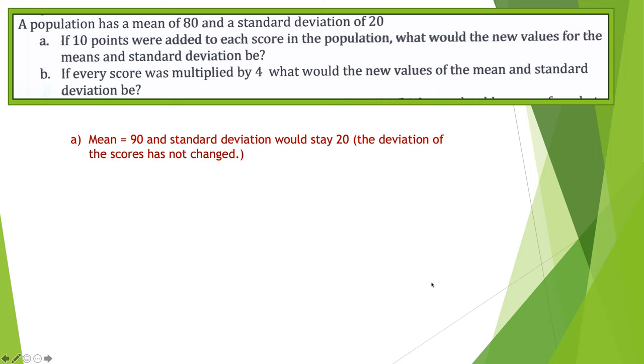So for part A, the mean would go up to 90 because everything adds 10 points. So when you average it out, you're gonna add 10 points. But the standard deviation would stay 20 because deviation of the scores, the distances from the mean, that has not changed. Everything went up.